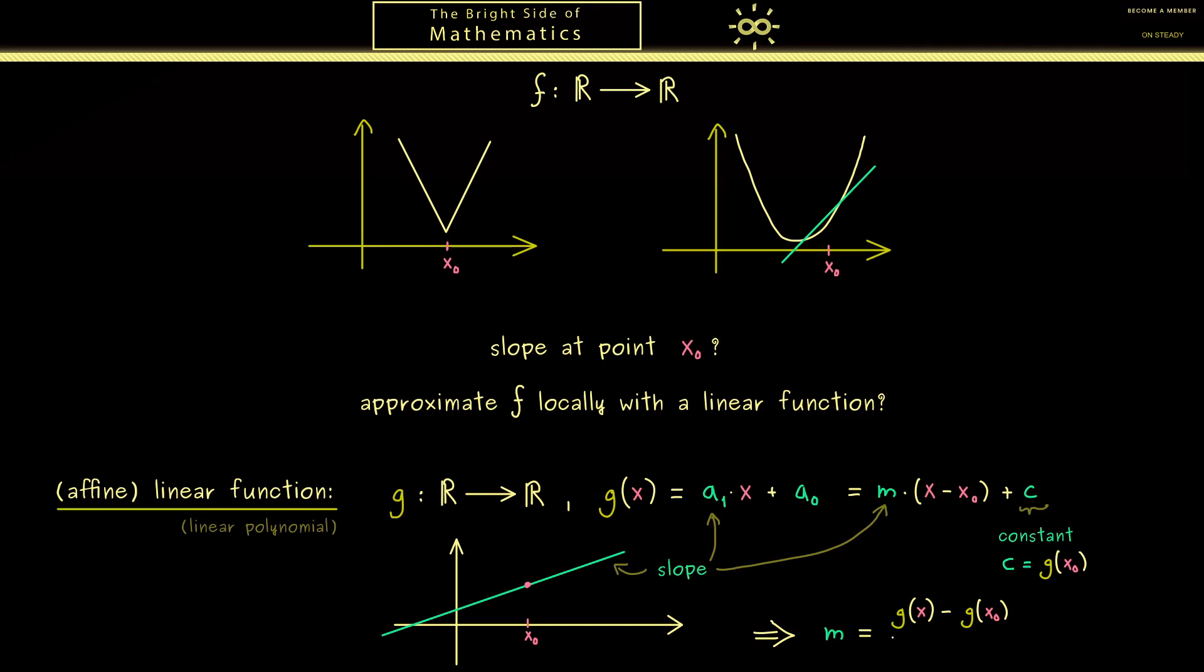Hence we get (g(x) minus g(x0)) divided by (x minus x0). And obviously this works no matter what x is as long as we don't divide by 0. Now because the formula looks like this it's often called the difference quotient.